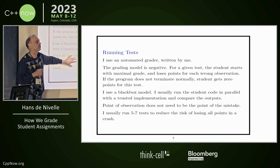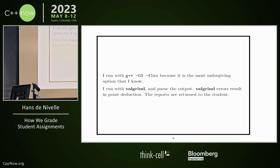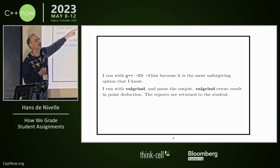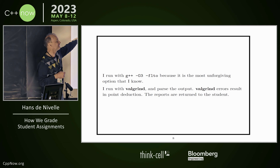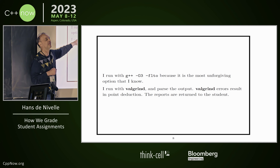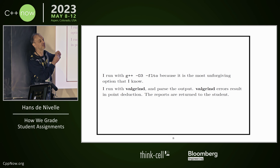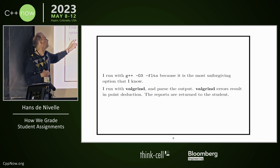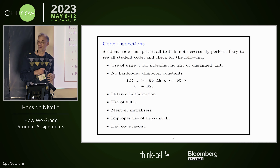I usually run 5–7 tests to reduce the risk of failure. I use these compiler options because these are the least forgiving — that's my experience. And we always run with Valgrind. If Valgrind complains, we parse the output and the student loses points. The Valgrind output also goes back to the students.